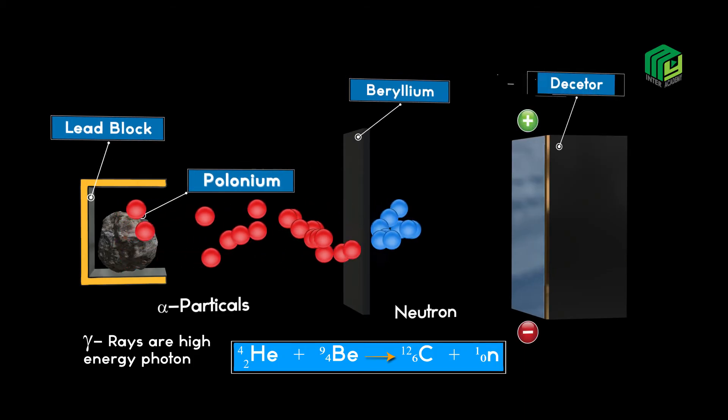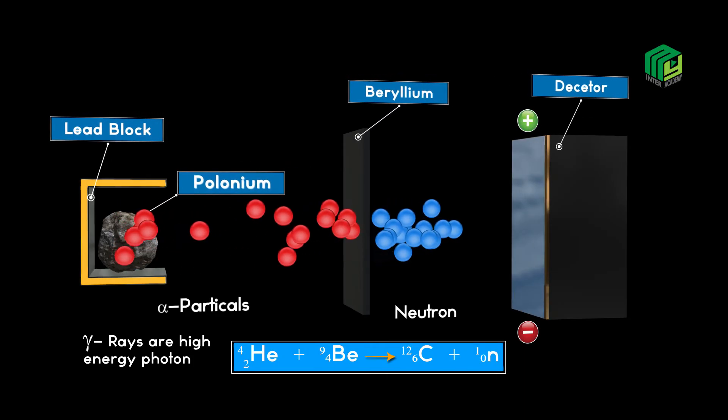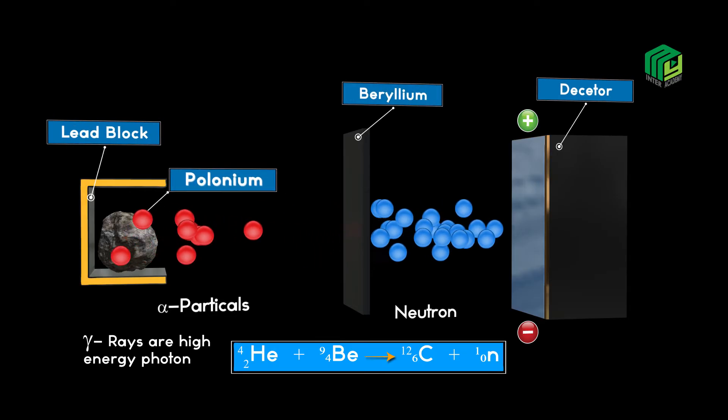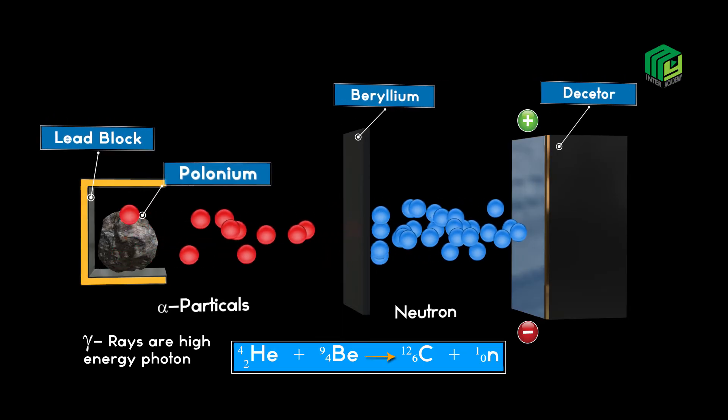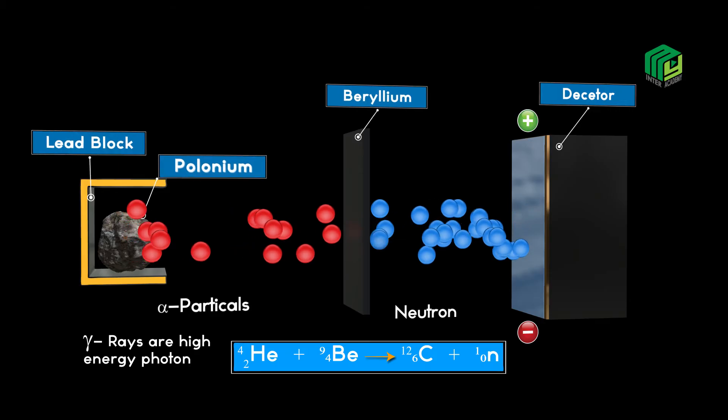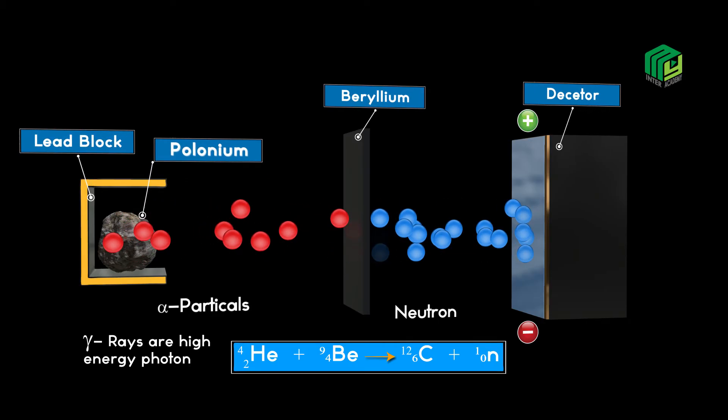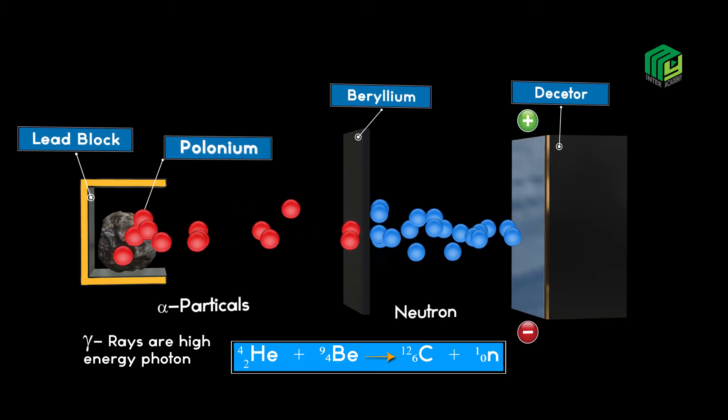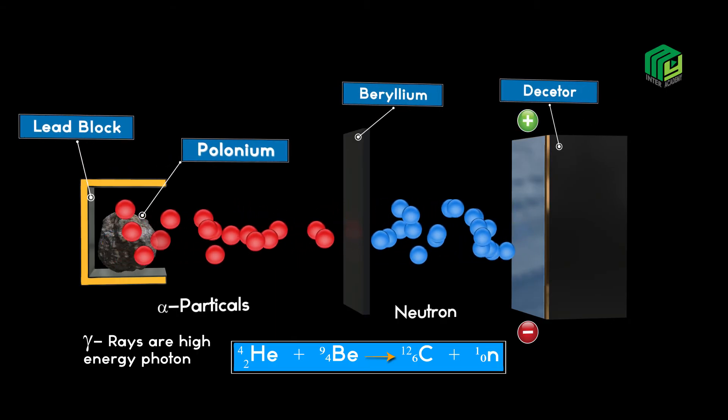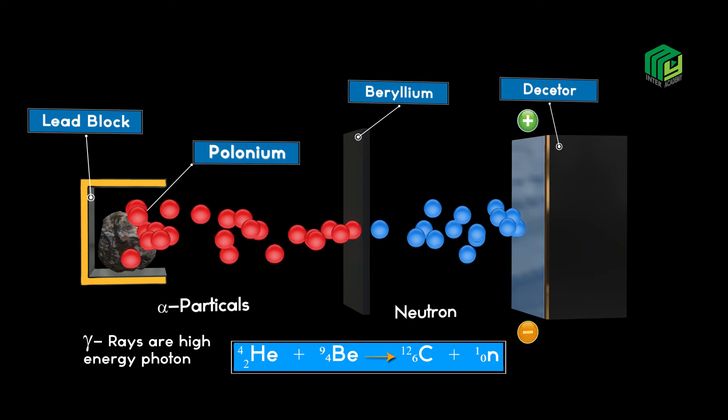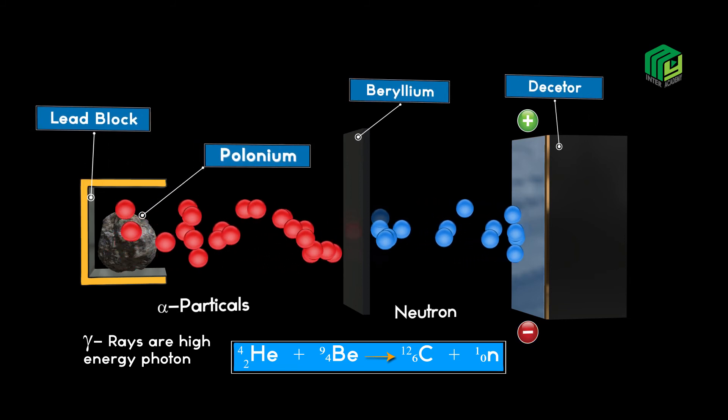A detector was placed after the beryllium metal to detect the type of particle. The detector did not show any deflection. This leads to the conclusion that the particles are neither positively charged nor negatively charged. They are neutral.